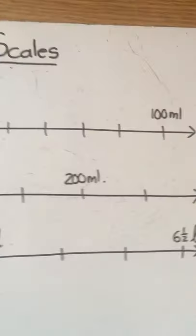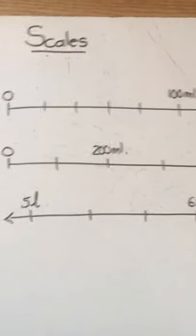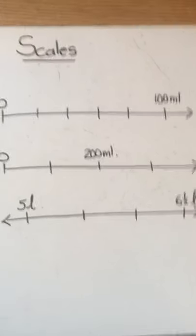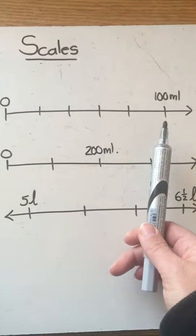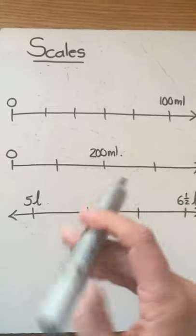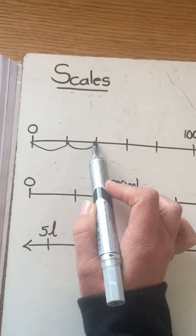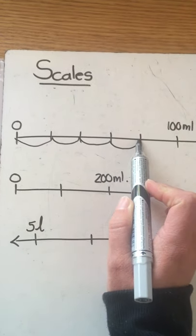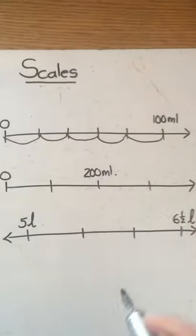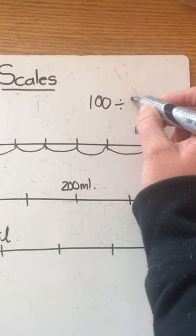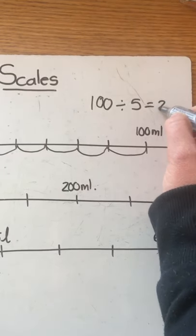If we look at these scales over here let me just show you some more examples. This one starts at zero and goes up to a hundred milliliters. Let's count the spaces in between. We have one, two, three, four, five spaces. Now if I take a hundred and I divide it by five then I get twenty.